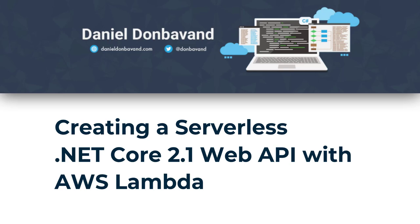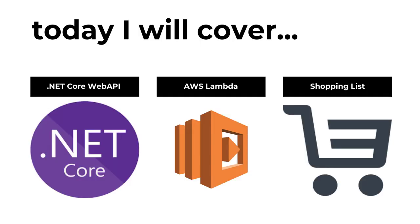Hello and welcome to this video on creating a serverless .NET Core 2.1 Web API with AWS Lambda. In this video we'll look at how we can create a .NET Core 2.1 Web API, then publish this to our AWS account. Our demo Web API will be looking at creating a shopping list, allowing us to add, remove and get our items from a shopping list. I'll also take you through some of the differences between .NET Core Web API Lambda and a standard .NET Core Web API. We'll then look at how we can publish our Lambda and interact with it.